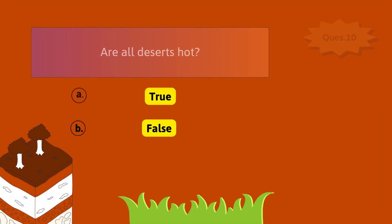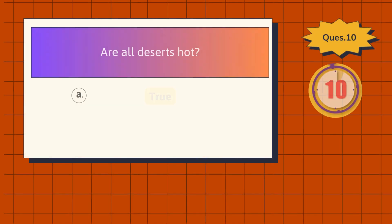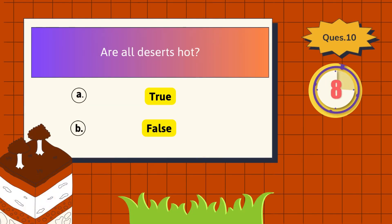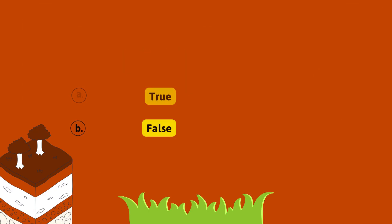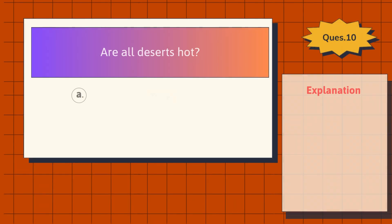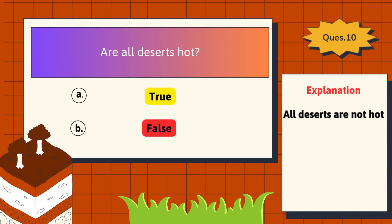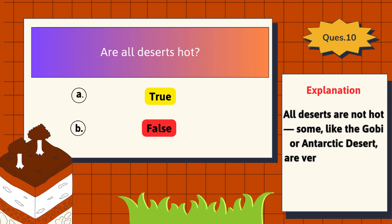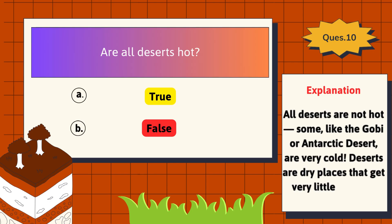Are all deserts hot? The correct answer is False — all deserts are not hot. Some, like the Gobi or Antarctic Desert, are very cold. Deserts are dry places that get very little rain, not always hot.